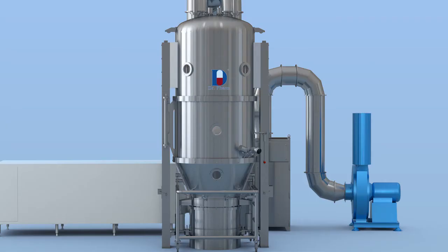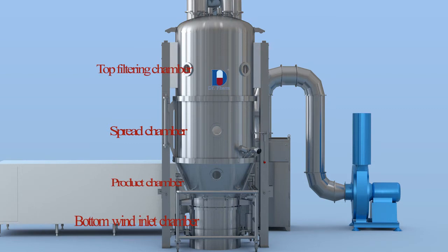Machine tower is designed in four sections including lower plenum duct, product container, expansion chamber, and top filter house.